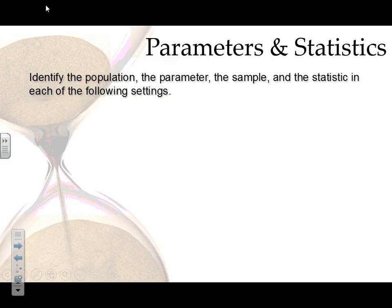Let's do a little practice, because one of the things we need to do with statistical inference is identify the different important pieces of a scenario. Looking at a study, we need to identify: the population — who is the population of interest; the parameter — what are we actually trying to measure for the population; the sample — who did they actually get information from; and the statistic — what value did they calculate from their sample.